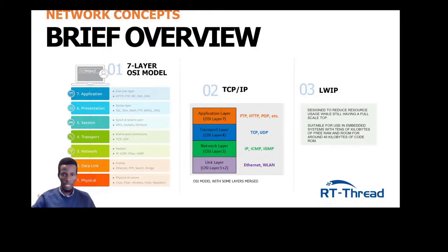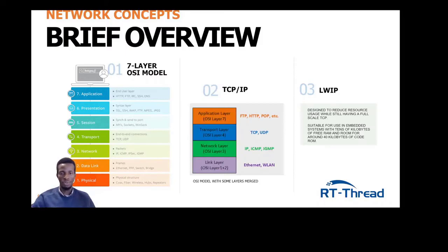The transport layer controls the reliability of communication. It does this through segmentation — the data is divided into small units called segments, each containing a port number and a sequence number for both source and destination. The port number helps identify the correct application to send a data segment to, while the sequence number helps either end reassemble the data segments correctly.